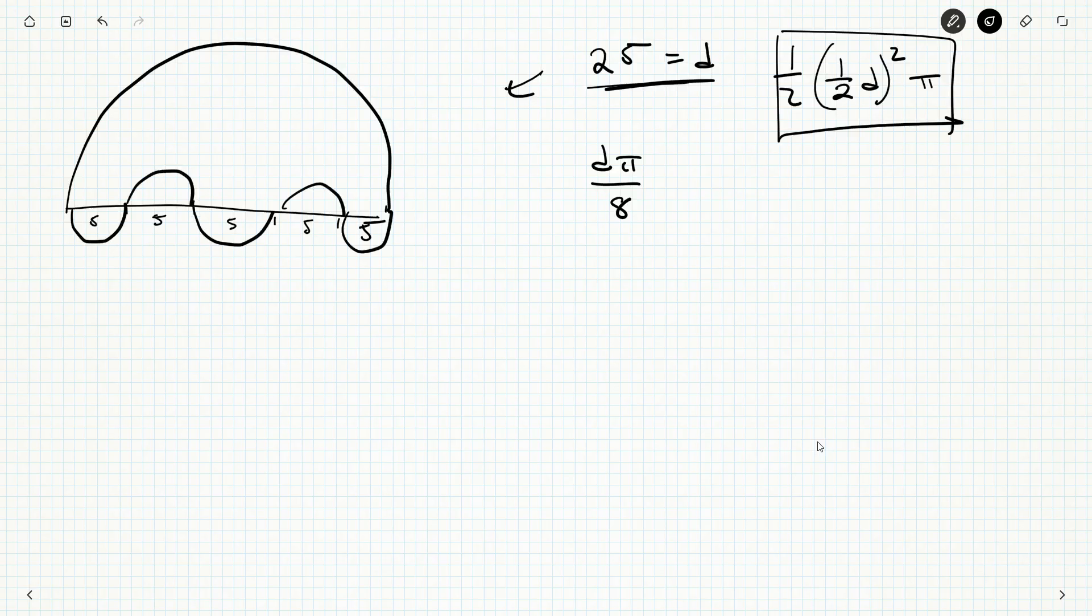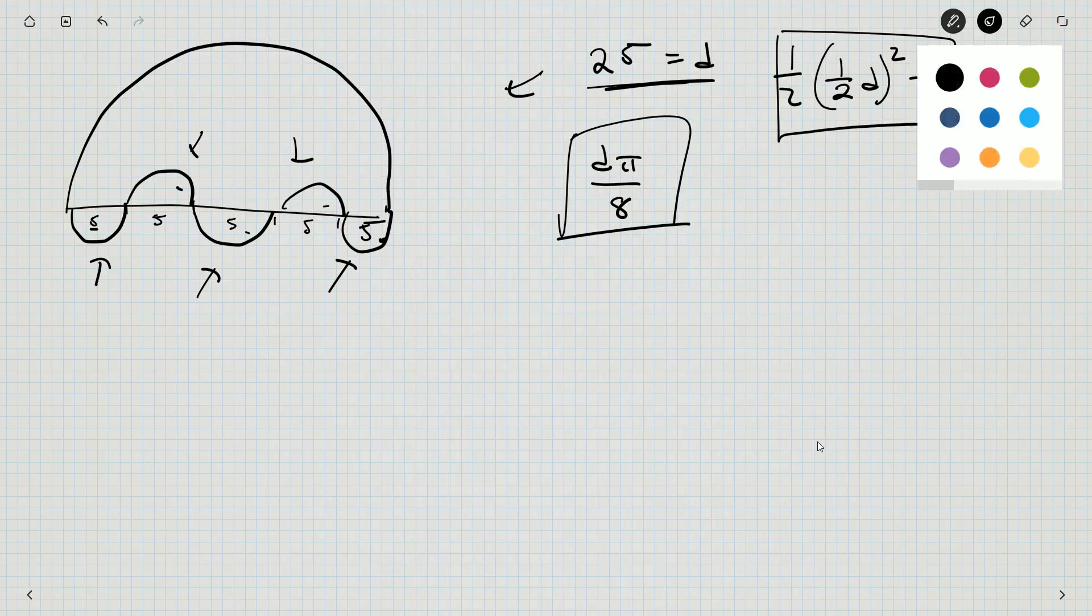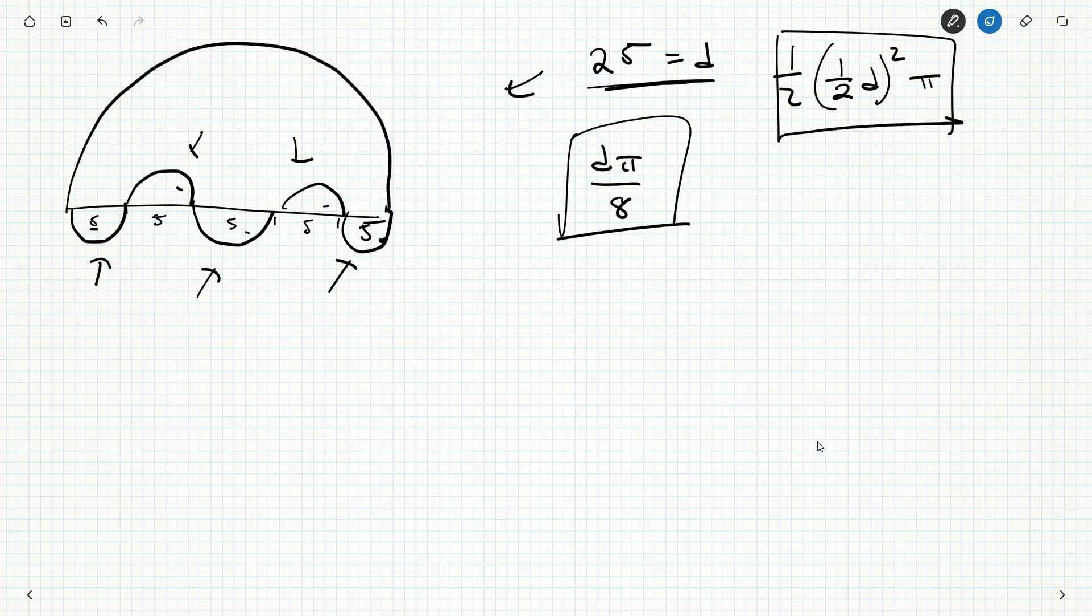So we could figure out the area of each of these. It's going to be 5π by eight, thanks to our formula here. And then we could add on three and then subtract two copies. Or you could just say this area and this area cancel each other out, so we don't have to worry about them. So you're just left with the big semicircle and then another copy of this small semicircle.